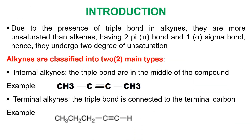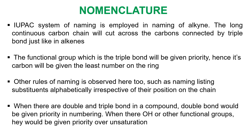Due to the presence of the triple bond in alkynes, they are highly unsaturated compared to alkanes, and they are classified into two main types just like the alkenes. We have internal alkynes and terminal alkynes. Internal ones are alkynes where the triple bonds are in the middle of the compound, while terminal ones are alkynes where the triple bonds are located at the terminal carbons. In terms of stability, internal alkynes are more stable than terminal alkynes.